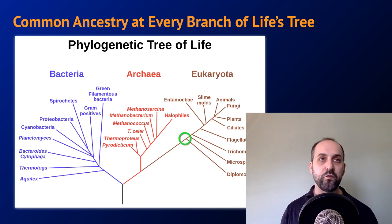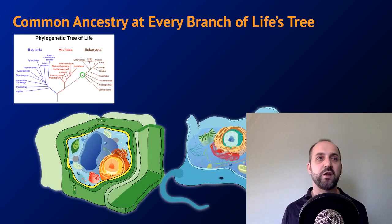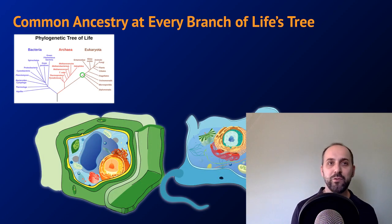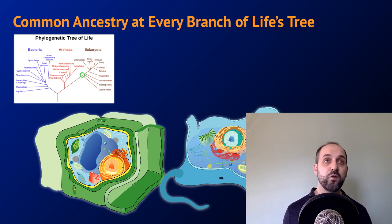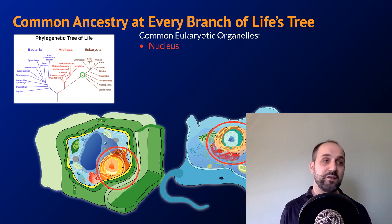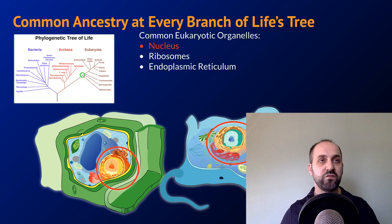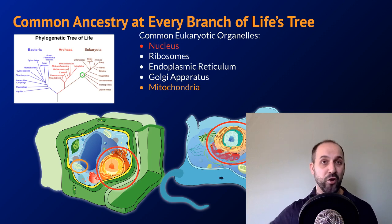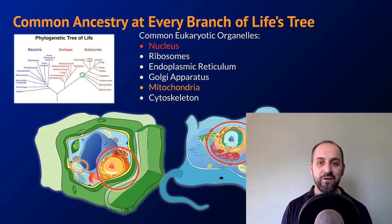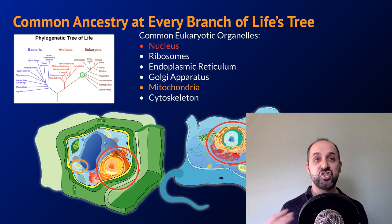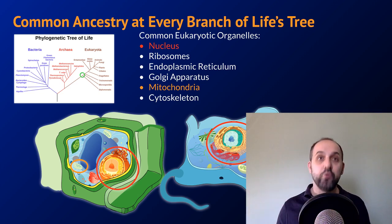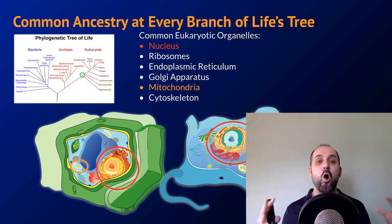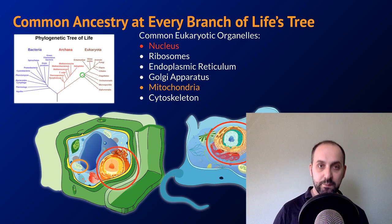Looking at eukaryotes specifically, we see plant-like and animal-like eukaryotes that probably look somewhat different, but there are common eukaryotic organelles we see in both. There's a nucleus in both, they both have ribosomes similarly structured in terms of the size of their ribosomal subunits, they've both got an endoplasmic reticulum, both have Golgi apparatus, both have mitochondria, and both have a cytoskeleton. The fact that all eukaryotic cells on the planet share all these common organelles helps establish the notion that they were probably present in the last universal common ancestor of all eukaryotes before it branched out into all the different cell types we see on the planet today.